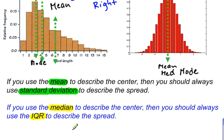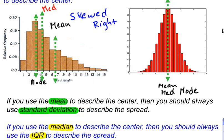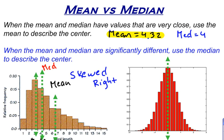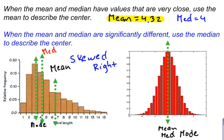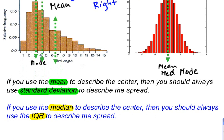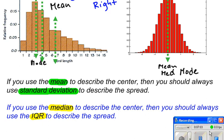So there we go. If the mean and the median are the same or very close to each other, use the mean to describe the center of the distribution. If the mean and the median are different, use the median to describe the center of the distribution. And if you use the mean, you should always talk about the standard deviation when describing the spread. If you use the median, you should always use the interquartile range to describe the spread.